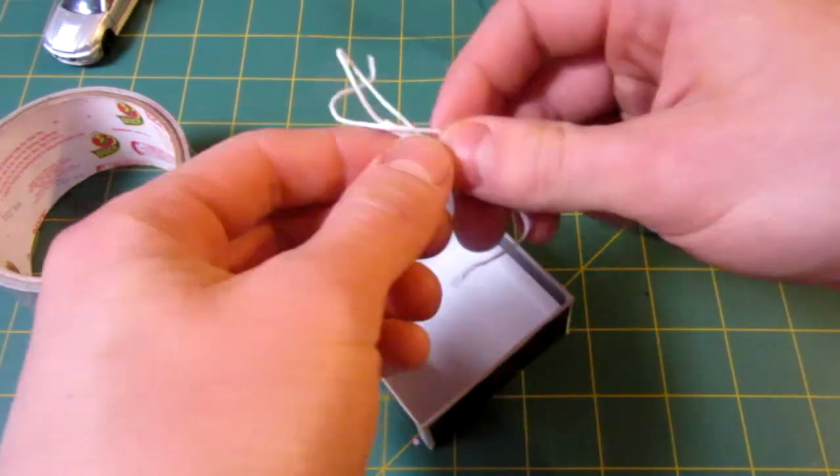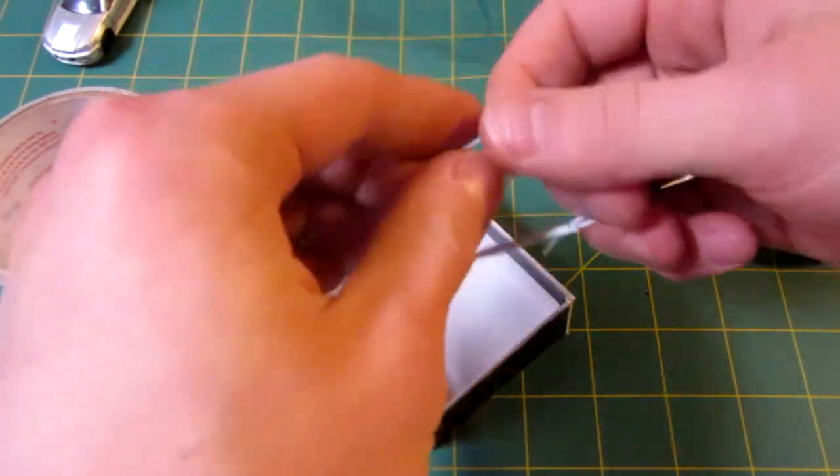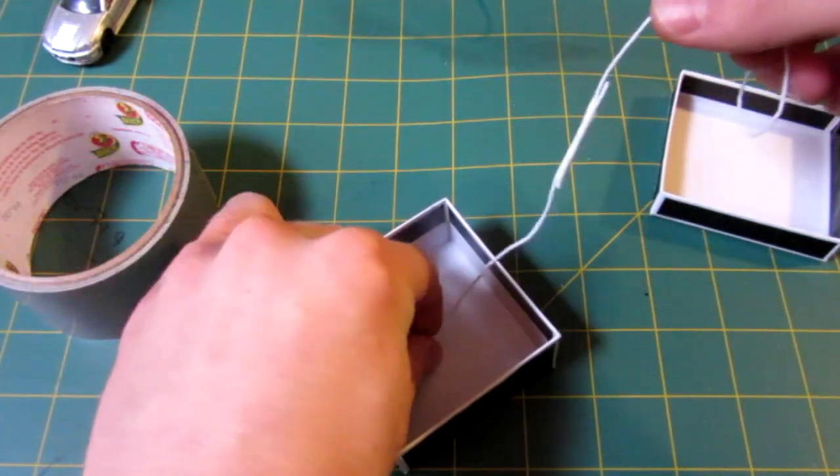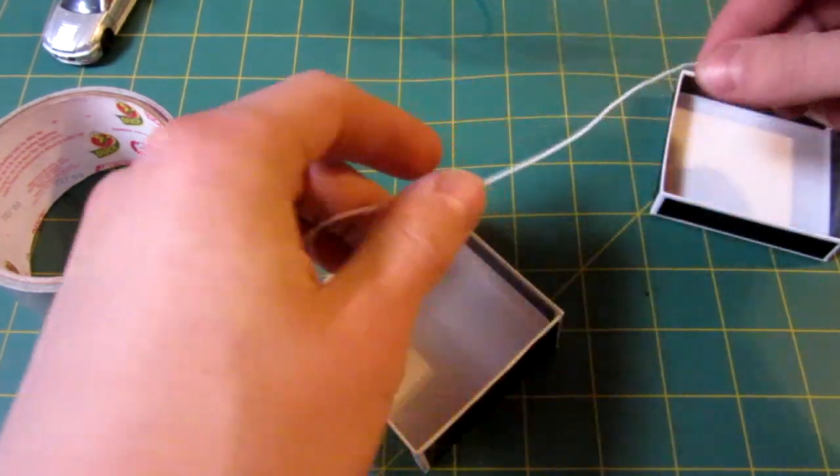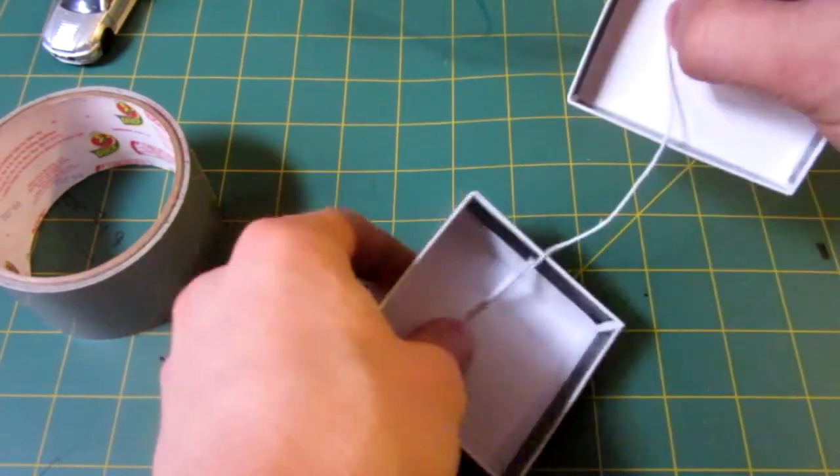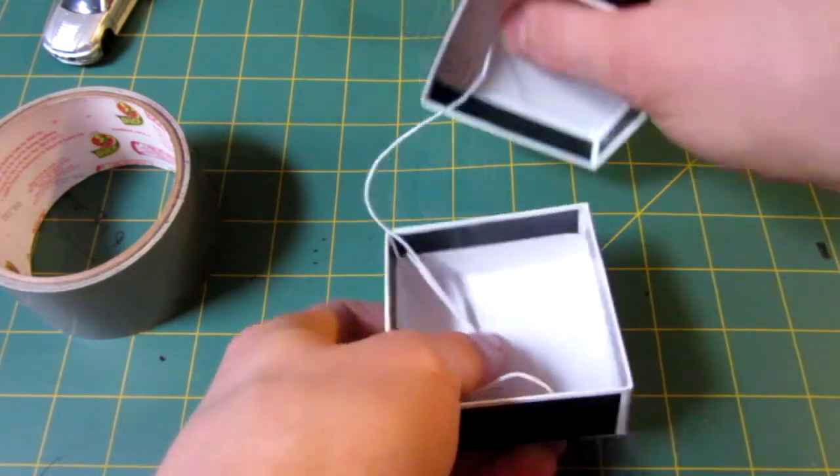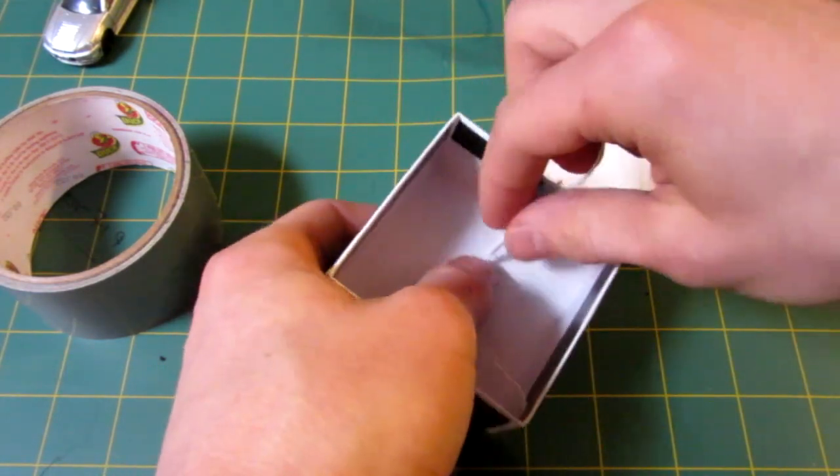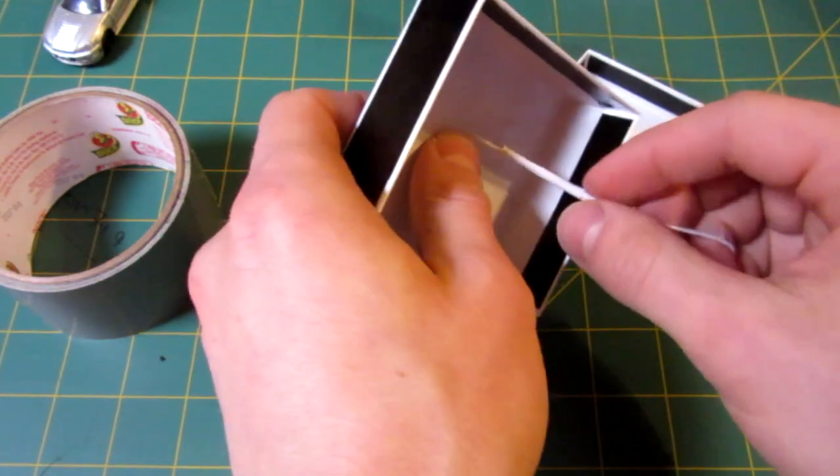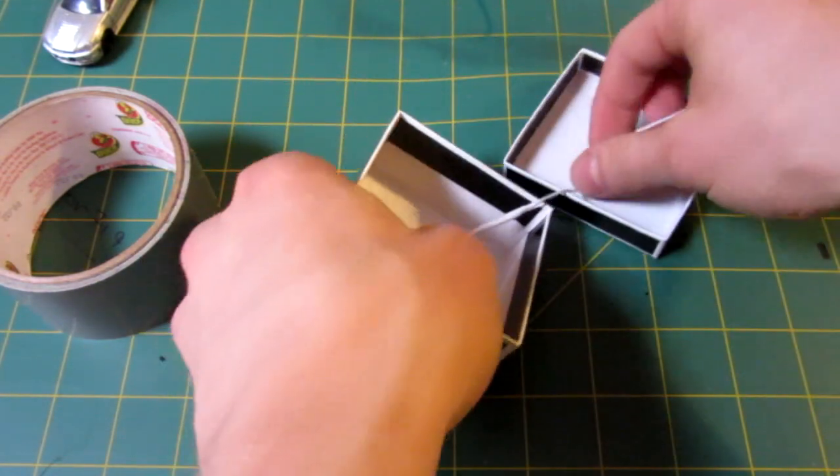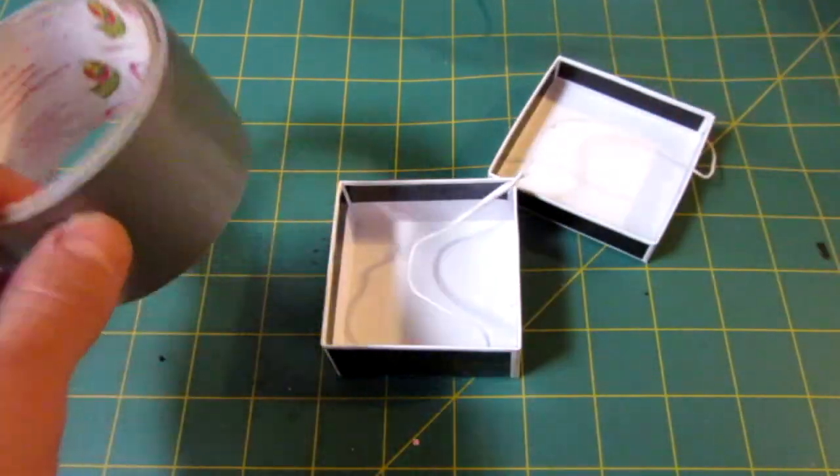Because what we're going to be doing is taking our string like this, attaching one end to this side and the other end to the lid, in such a way that when it is pulled open, it pops. So to do this, you want to tape it with minimal slack, like I'll probably tape it here and here, using my duct tape.